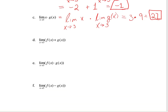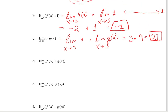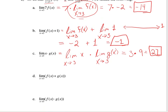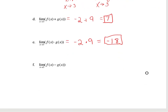Go ahead and pause the video and do the next ones — you can fast forward to check if you got them right. The limit of f(x) + g(x): take each limit and add them — negative 2 + 9 = 7. For f(x)·g(x) as x approaches 3: multiply the limits — (−2) × 9 = negative 18. And last, f(x) − g(x): subtract the limits — negative 2 − 9 = negative 11.